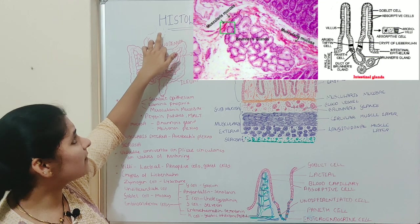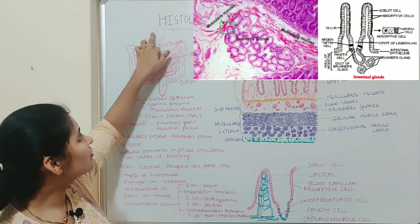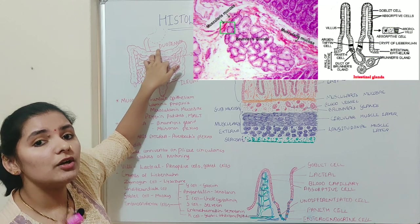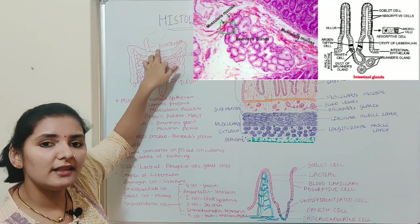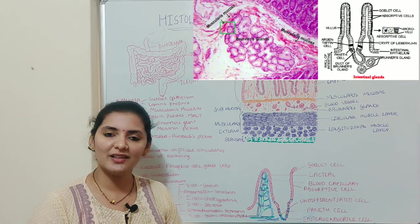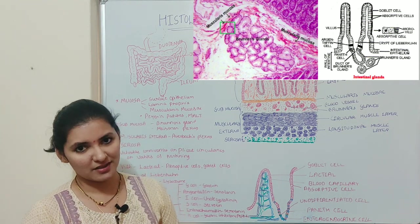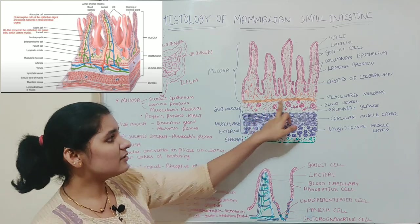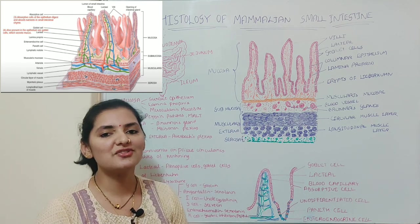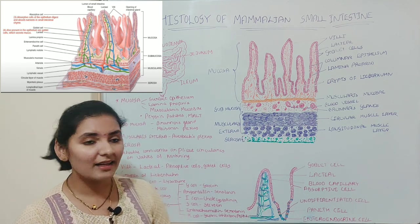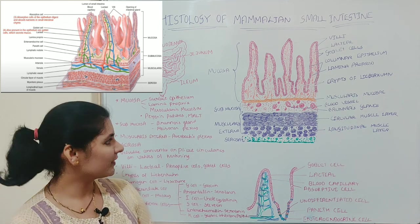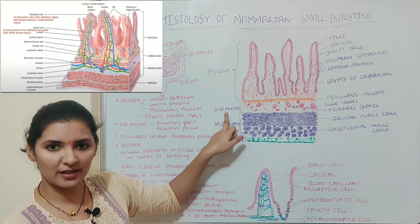The mucus secreted by Brunner's glands protects the inner lining of the duodenum from the acidic gastric juice, which is secreted by the stomach and enters the duodenum. Apart from that, the submucosa region also has clusters of ganglia known as Meissner's plexus. So that is about the submucosa layer.